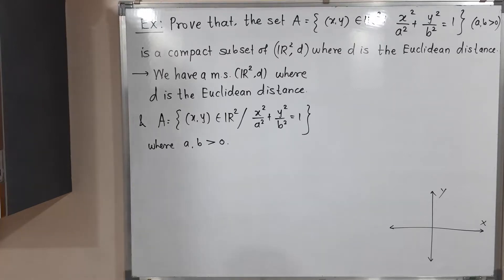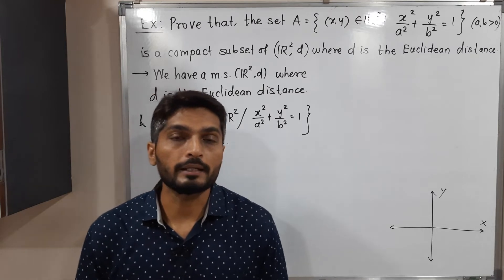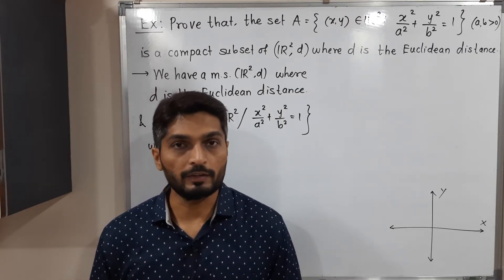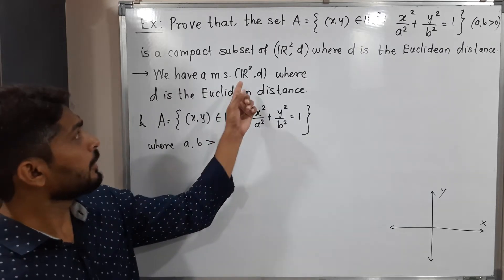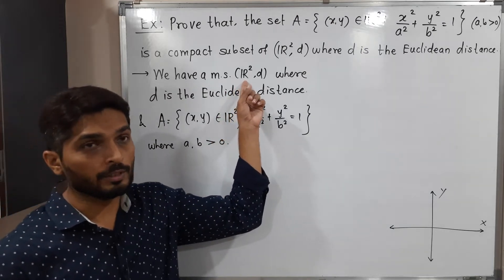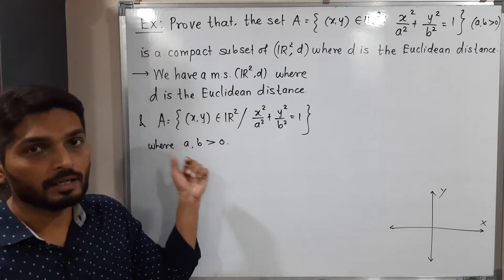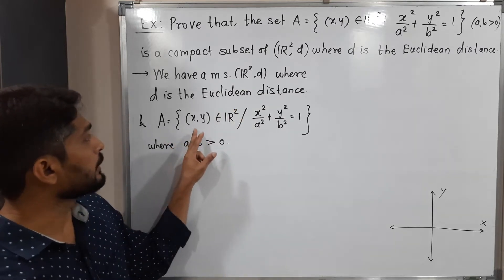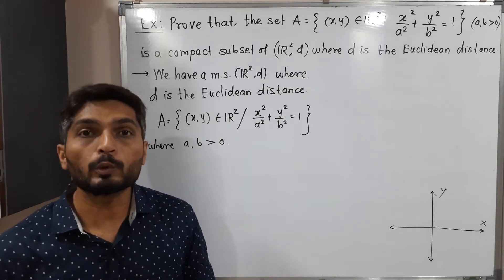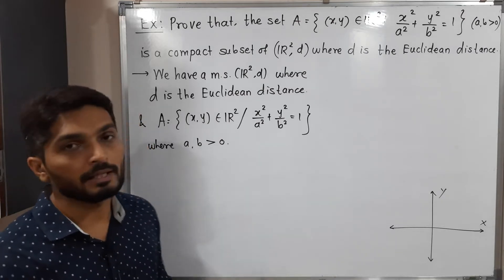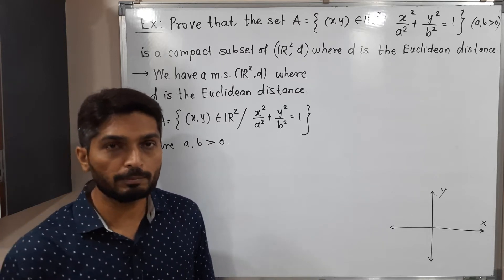In this video we are going to discuss the set A and prove that it is a compact subset of R² with the Euclidean distance D. Given information: we have the metric space R²D where D is the Euclidean distance, and the set A = {(x,y) ∈ R² : x²/a² + y²/b² = 1}, where a and b are positive real numbers.